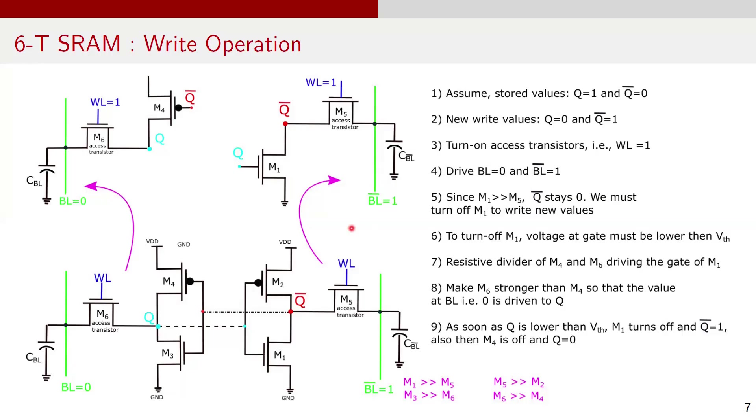After store and read operations, let's walk through the write operation of an SRAM cell step by step. Assume the SRAM cell initially holds a 1 at node Q and 0 at node Q bar. Our goal is to change this stored value and write 0 at Q and 1 at Q bar. In order to do this, we set the word line WL to 1 which turns on the access transistors and connects the bit lines BL and BL bar to storage nodes Q and Q bar.